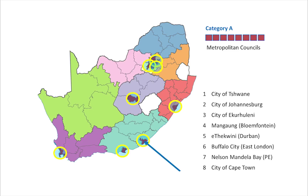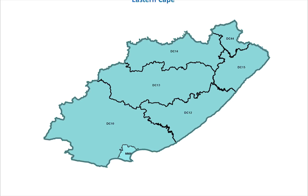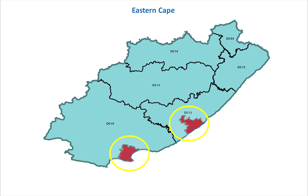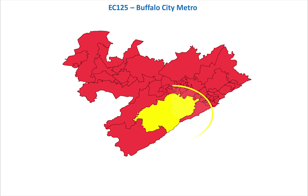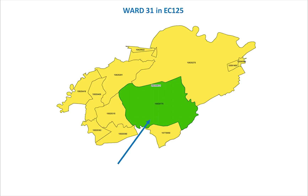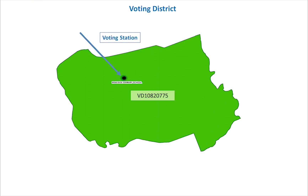Each metropolitan council is divided into wards. The Eastern Cape has six districts and two metropolitan councils. All metropolitan and local councils are divided into wards. For example, Buffalo City is a metropolitan council and is divided into wards. Each ward is divided into voting districts. A voting district is serviced by one voting station, so when voters come to vote, they will vote at the station in their voting district where they are registered.